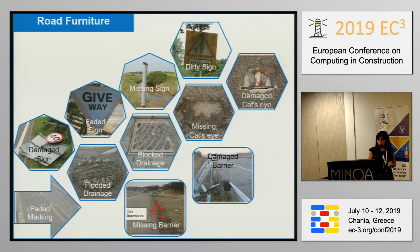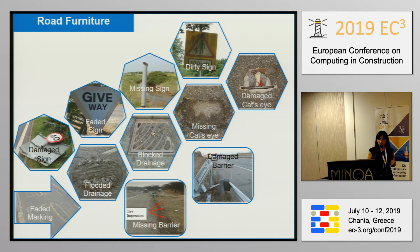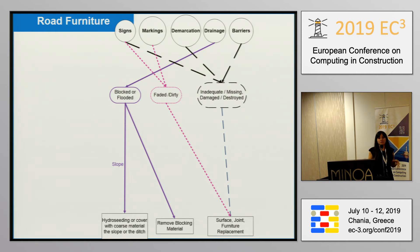I continued this with road furniture, which was harder because defects don't exist clearly in manuals. I consulted people from Highway England and Bentley Systems to identify the main defects. Combining all that knowledge, I found the main defects include damaged signs, faded signs, or missing signs, and for drainage the defects might be flooded or blocked, and for markings they can be faded or missing. I categorized these with road furniture on the first row, defects on the second, and maintenance techniques on the third.